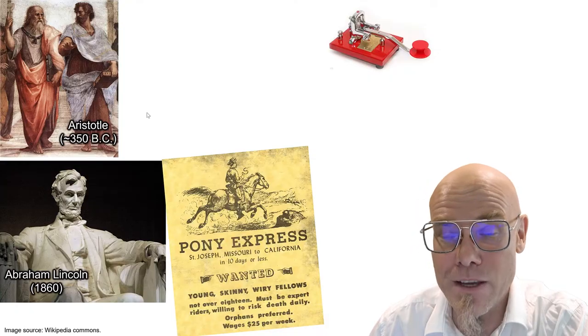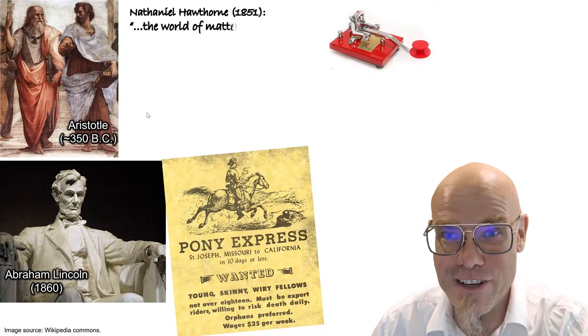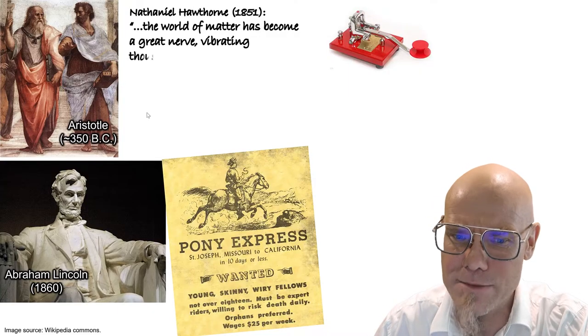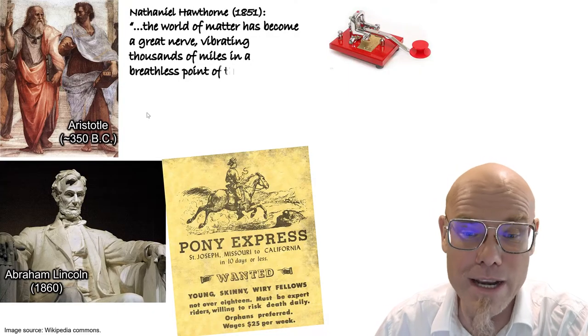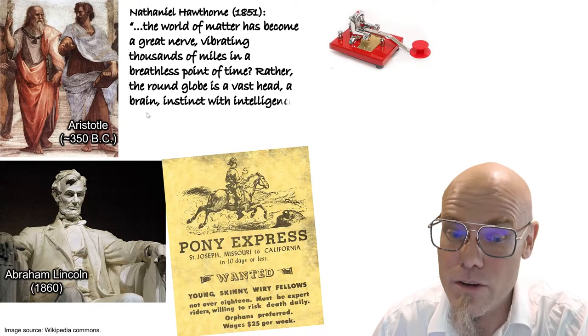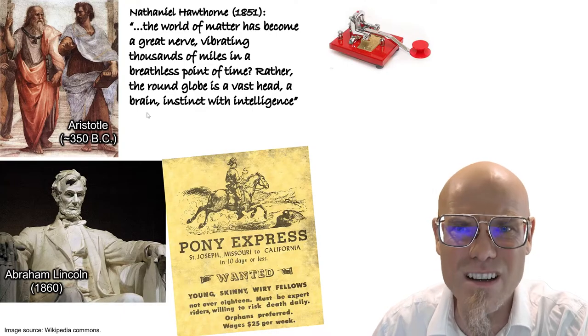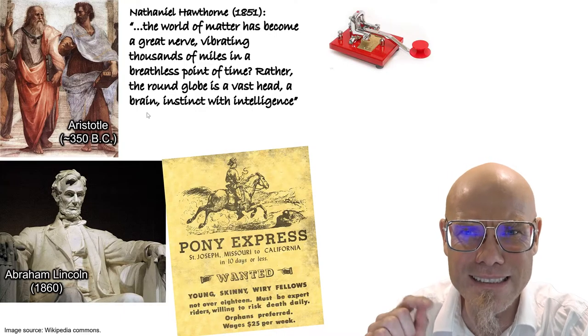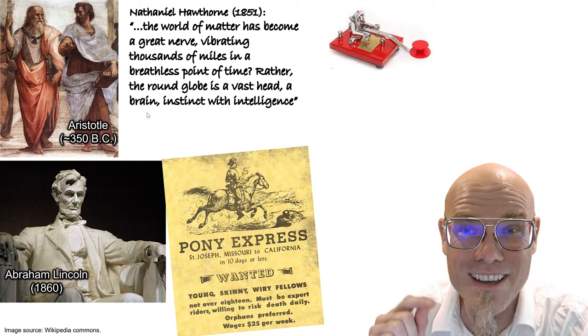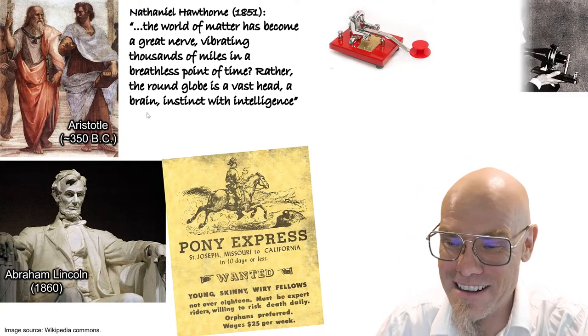And then during the same time with the telegraph, the imagination grew wings. The world of matter has become a great nerve, vibrating thousands of miles in a breathless point of time. Rather, the round globe is a vast head, a brain instinct with intelligence because of a telegraph that was like Morse code.